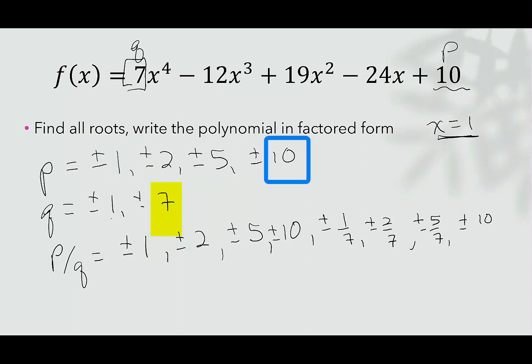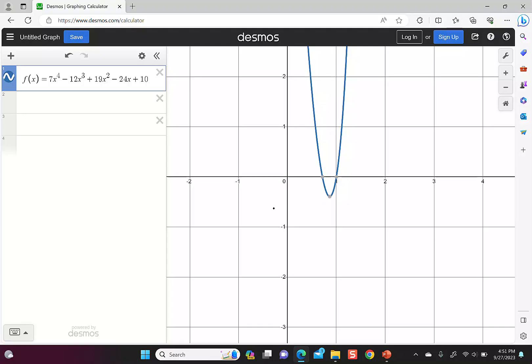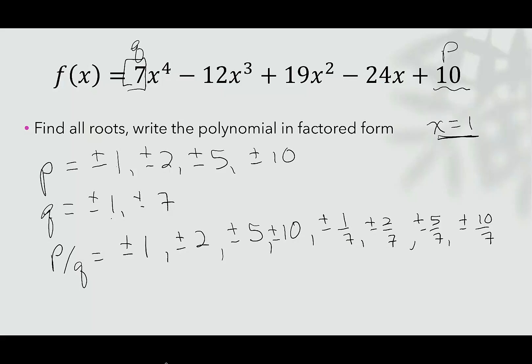So what the Rational Root Theorem says is if there's a rational that is a root of this function, it will be one of these numbers. The good news is that Desmos is giving us a hint. We can see the 0.714. It tells me this number is positive and it is less than 1.